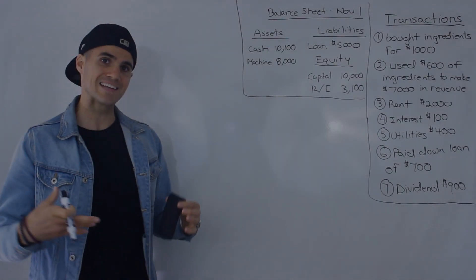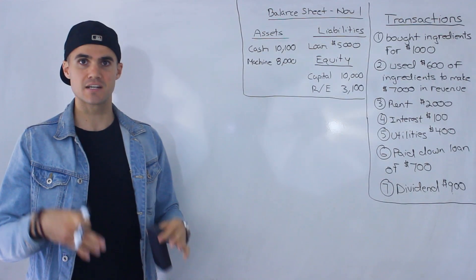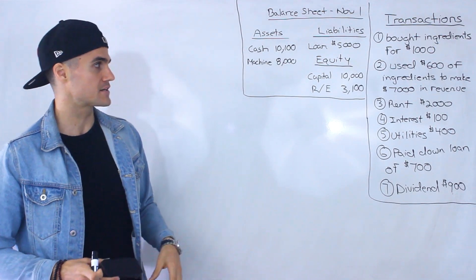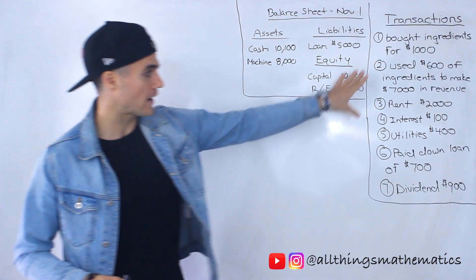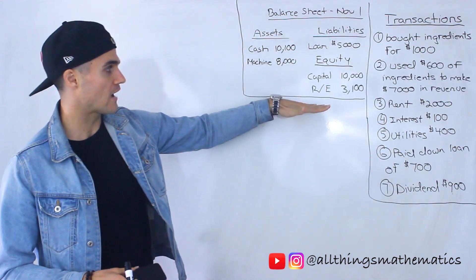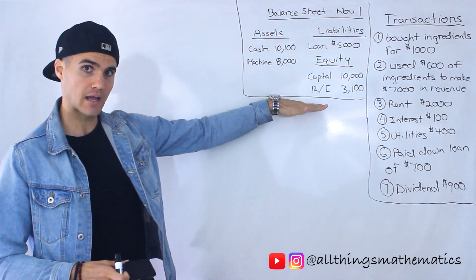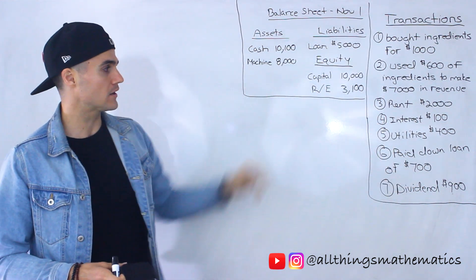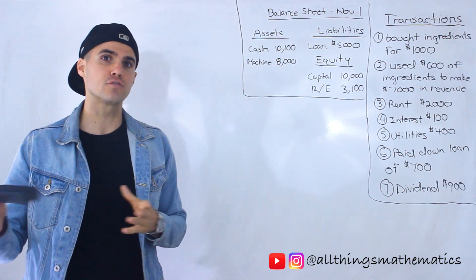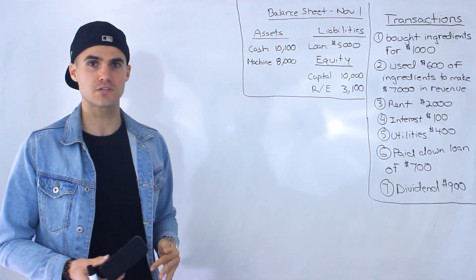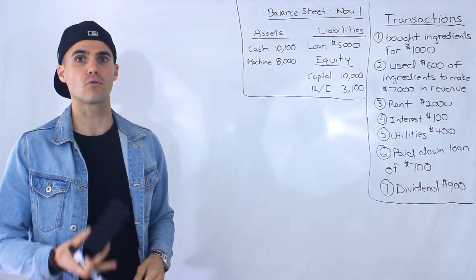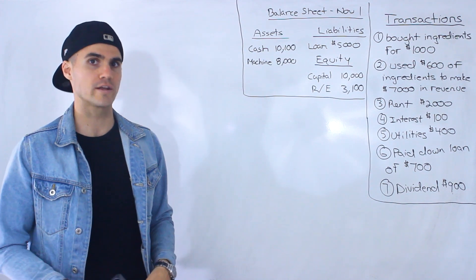So now what I'm going to do is take that same scenario that we just did — the fifth scenario. Notice how I have all of the transactions written out over here. I have the balance sheet at the beginning of the period. But instead of showing you how these transactions flow through financial statements, I'm now going to show you how they flow through equations.